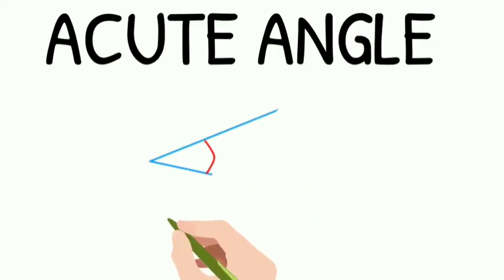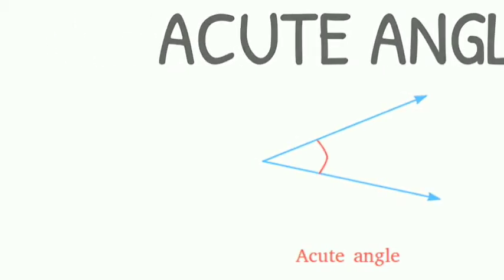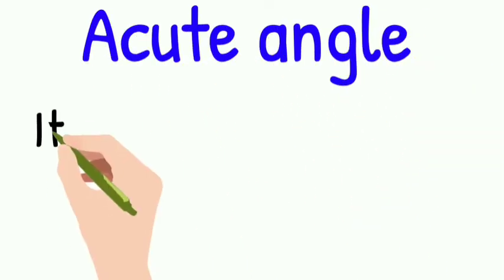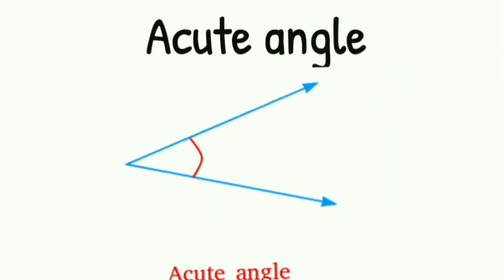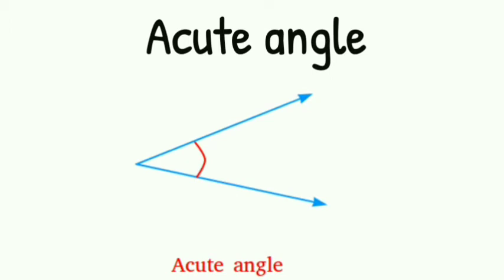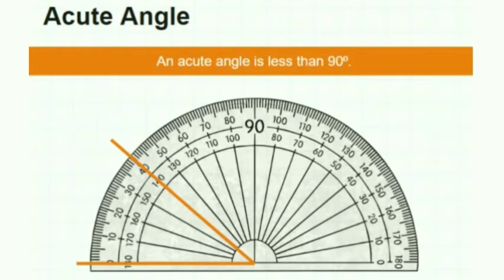The first angle we are going to be learning about is acute angle. Acute angle lies between 0 degrees to 90 degrees. This is the example of an acute angle.